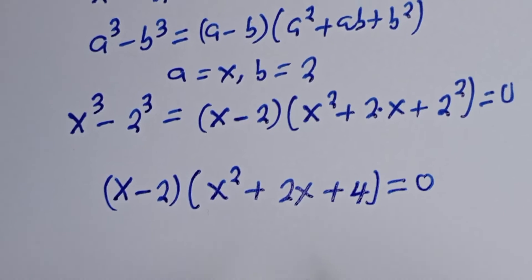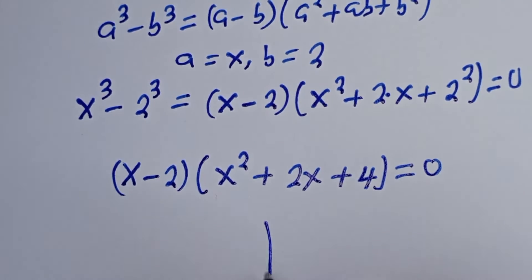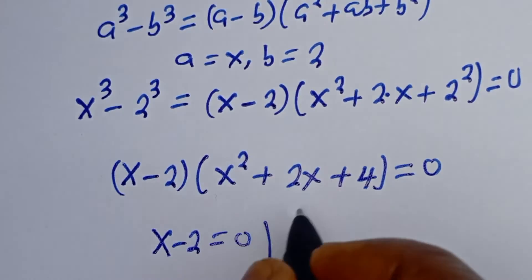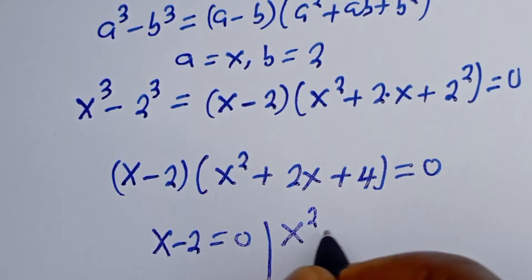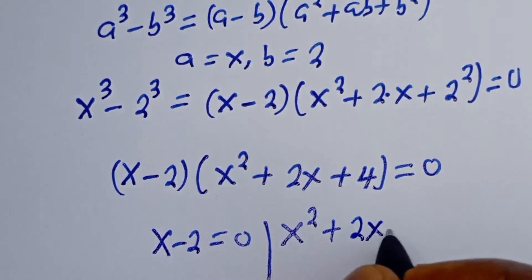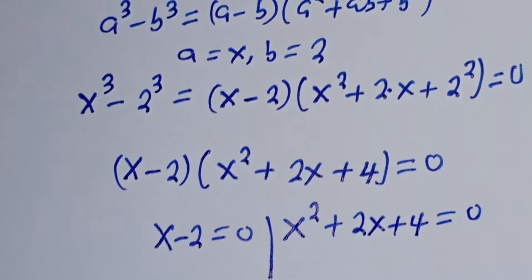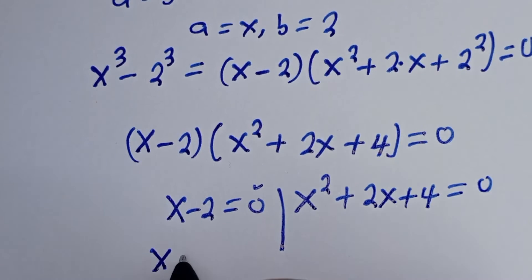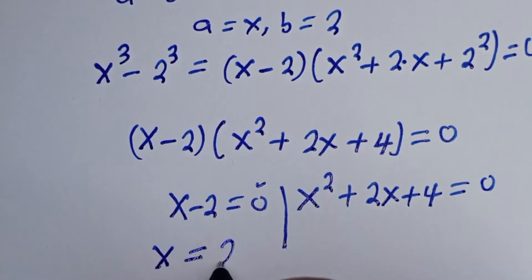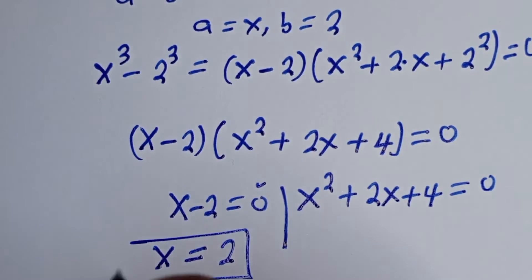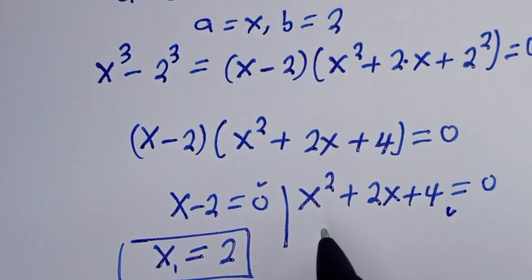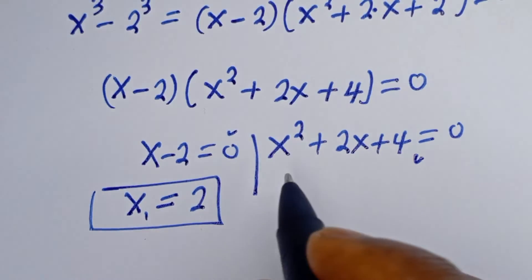There are two cases here. The first case is s minus 2 equal to zero, and the second case is s squared plus 2s plus 4 equal to zero. From the first case, s is equal to 2. Let's call this s₁.